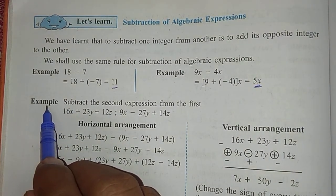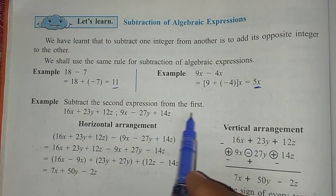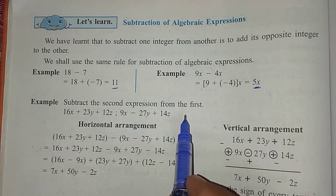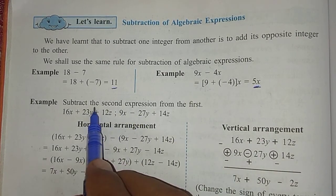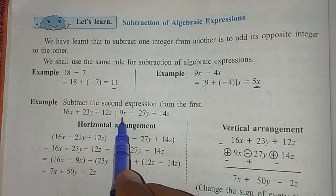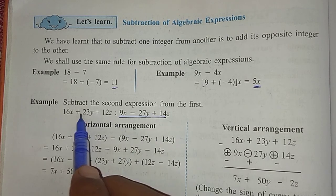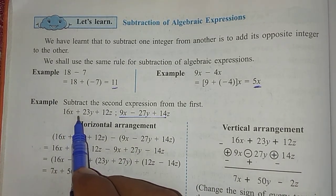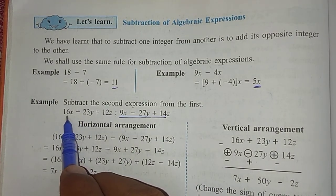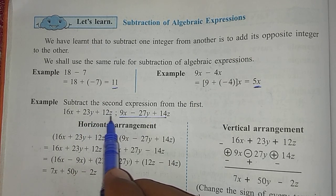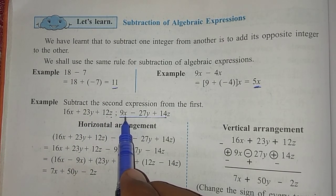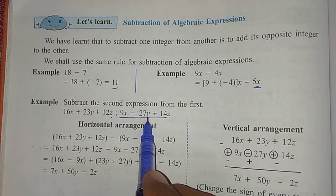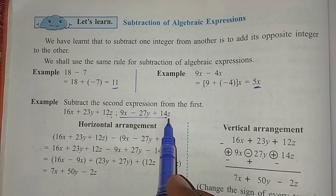One more example is given: subtract the second expression from the first. Here it is clearly mentioned that the second expression we have to subtract from the first one. The example given is 16x plus 23y plus 12z, from which we have to subtract 9x minus 27y plus 14z.